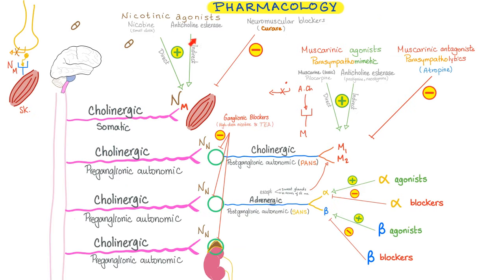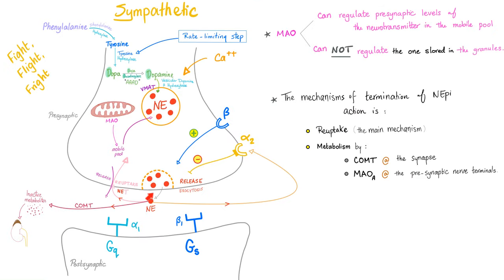In pharmacology, you can have nicotinic agonist or antagonist, muscarinic agonist or antagonist. When it comes to agonists, you can have direct or indirect agonist — an indirect agonist is a cholinesterase inhibitor. You can also have alpha agonist or alpha blocker, beta agonist or beta blocker. Norepinephrine can act on alpha 1, alpha 2, and beta receptors. Alpha 2 is negative feedback — it's anti-sympathetic and decreases the release of norepinephrine. Beta 1 is in your heart, beta 2 in your bronchi, and beta 3 for lipolysis.